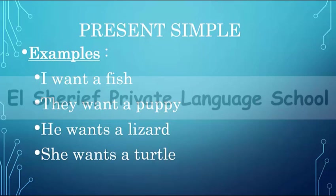And number three: 'he wants a lizard.' After he, she, and it, we add -s, -es, or -ies to the verb, as you know. Today we are talking about 'want,' so we add -s to 'want.' We say: he wants a lizard, she wants a turtle.